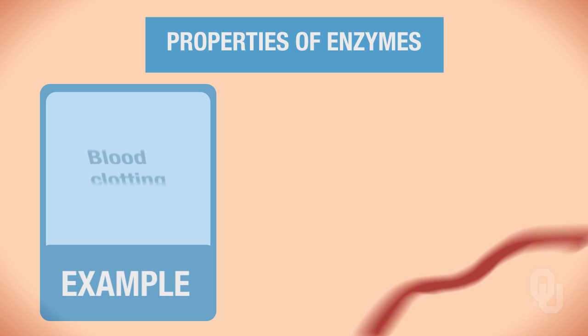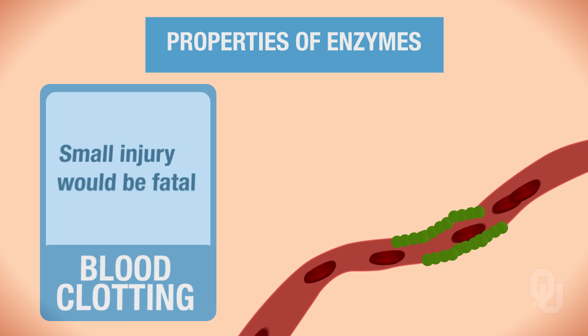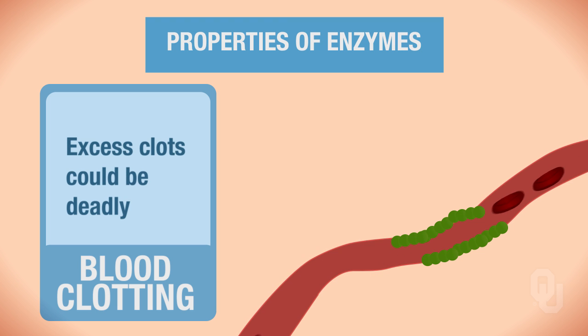One example of this is blood clotting. If I hit my arm and break a capillary, the broken blood vessels release chemicals that activate the enzymes that start blood clotting. The platelets will form a plug to stop the bleeding and allow that vessel to heal. Without the enzymes activating to form a clot, a small injury would allow the body to bleed excessively and could be potentially lethal. On the other hand, if clotting did not require activation, we would spontaneously create blood clots that could stop blood flow to the heart or the brain and could be deadly.